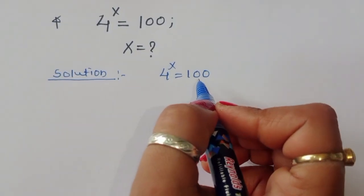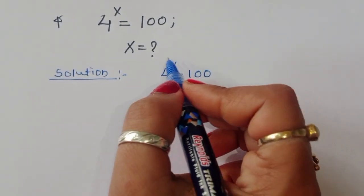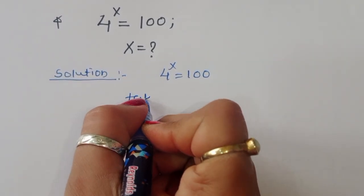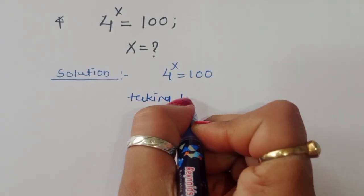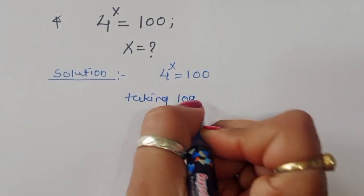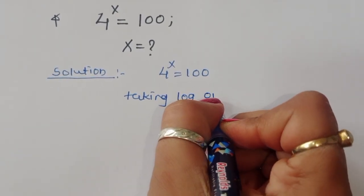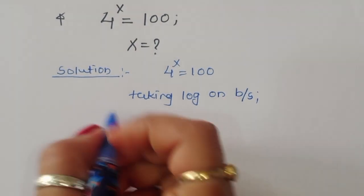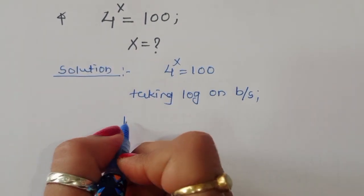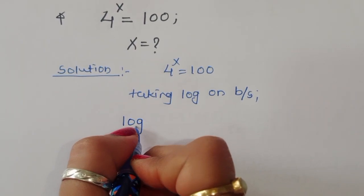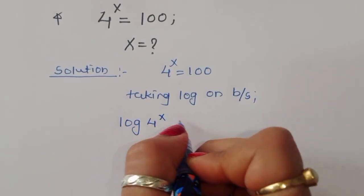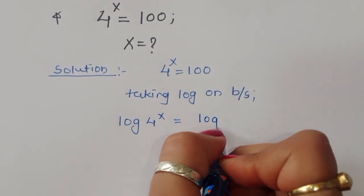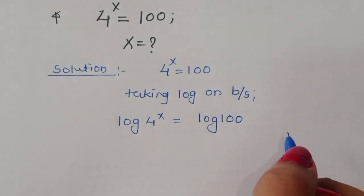So, what we can do here is first take log on both sides. Taking log on both sides, we get log of 4 power x is equal to log of 100.